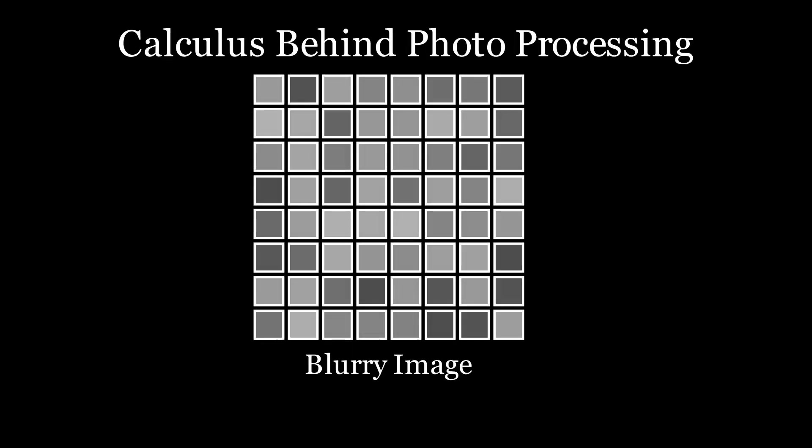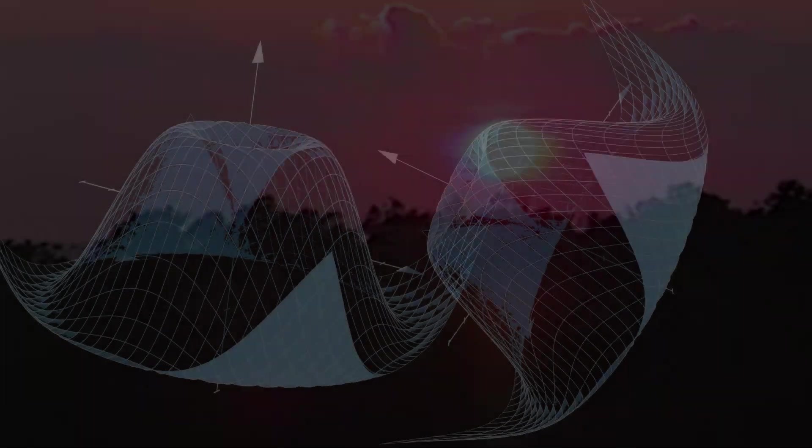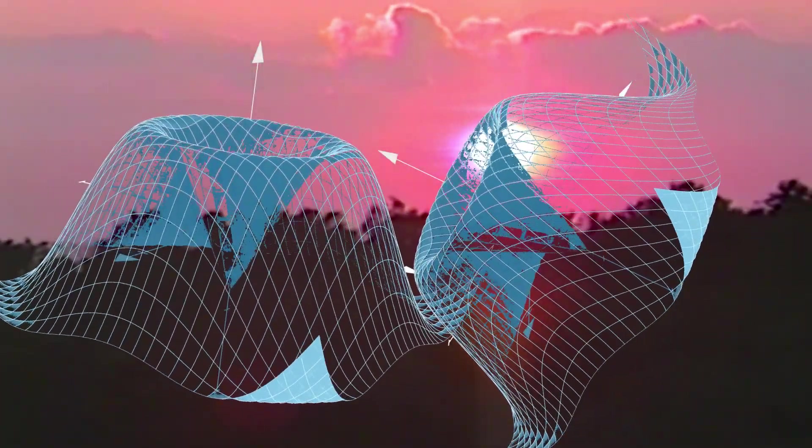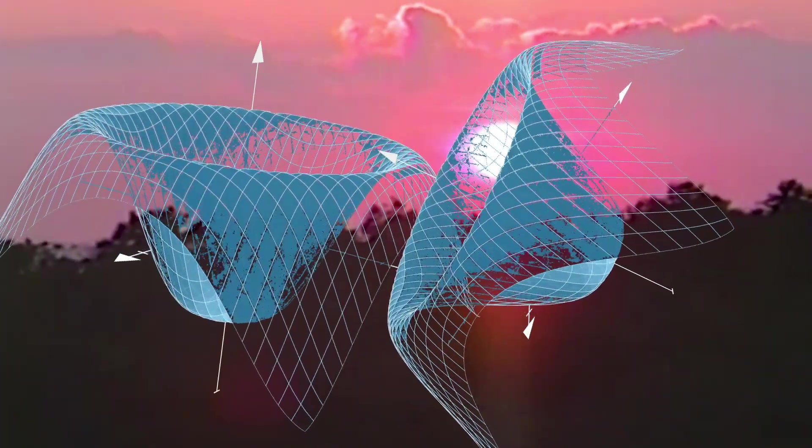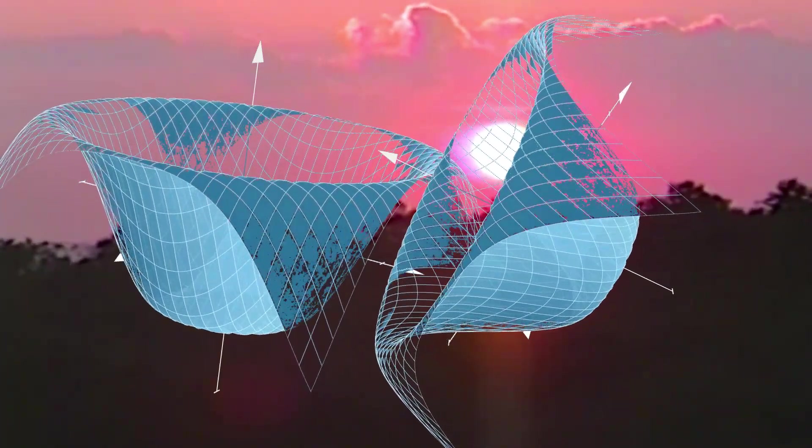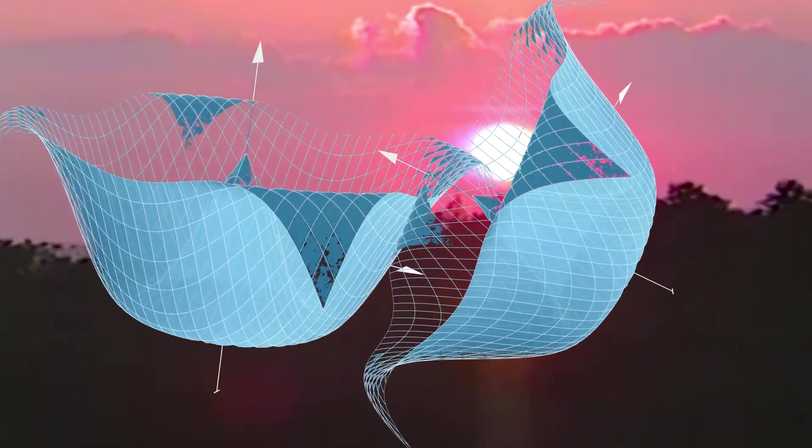Here's a blur image. In this state, it's hard to make out any details, but your smartphone uses calculus to sharpen it. Also, just keep in mind that this is an ultra-simplified explanation. Real-world photo processing involves far more complex mathematical techniques, including partial derivatives, gradient descent, and convolutional transformations.